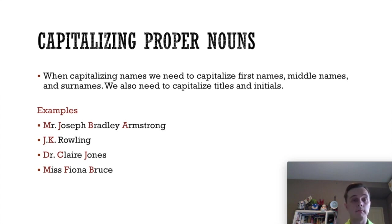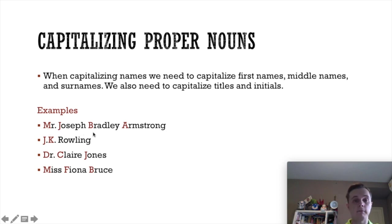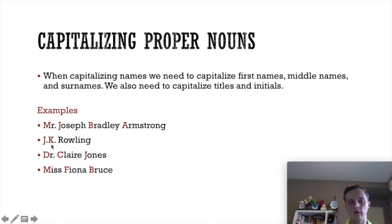For example, my name is Mr. Joseph Bradley Armstrong. The title "Mr." needs a capital M, my first name Joseph needs capital J, my middle name Bradley uses capital B, and my surname Armstrong uses capital A. You probably know the author J.K. Rowling, who wrote Harry Potter. She uses initials — J for Joanne, and K for her middle name — and then capital R for Rowling. So initials always use capital letters.